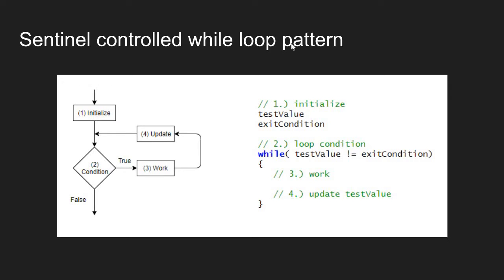A sentinel-controlled loop — here I have listed the four steps to build a good loop, where we initialize our condition variables, we test a condition, if the condition is true, we do some work. And then we update our condition variables, and then test again. For a sentinel-controlled loop, we can set up the loop as follows.